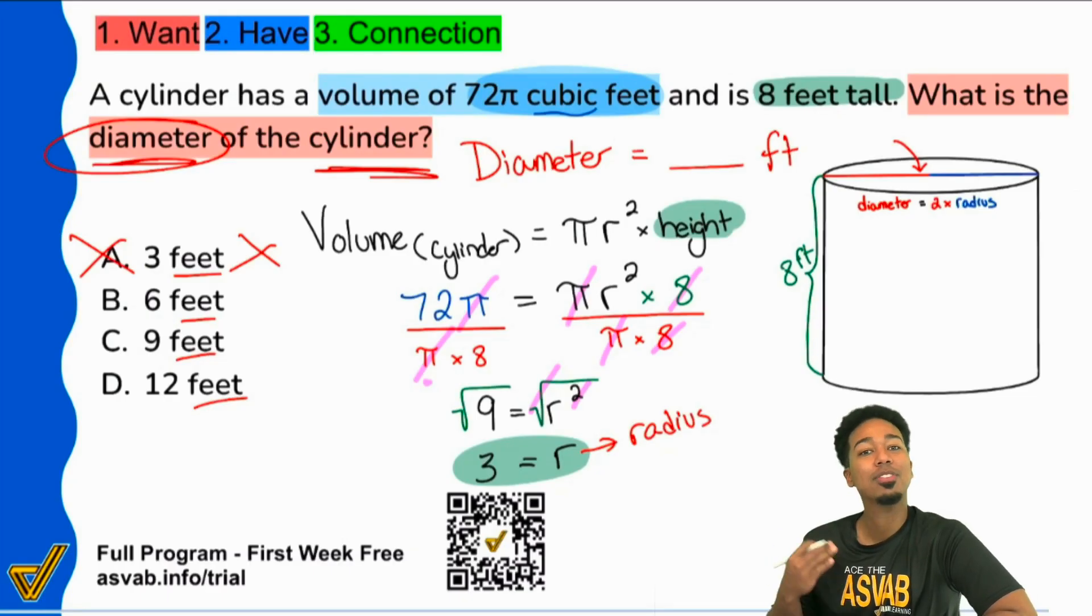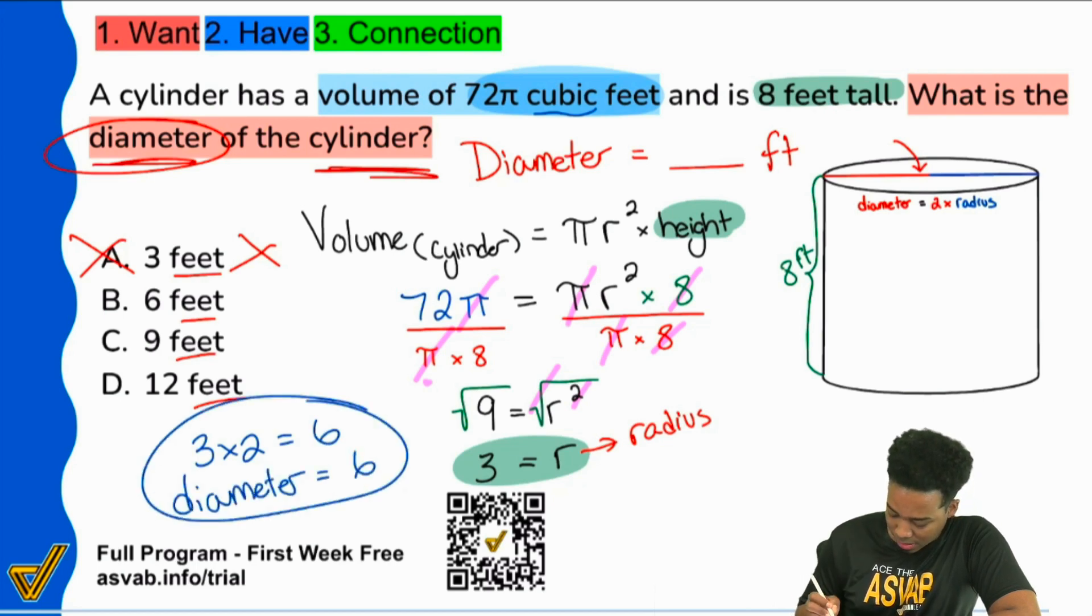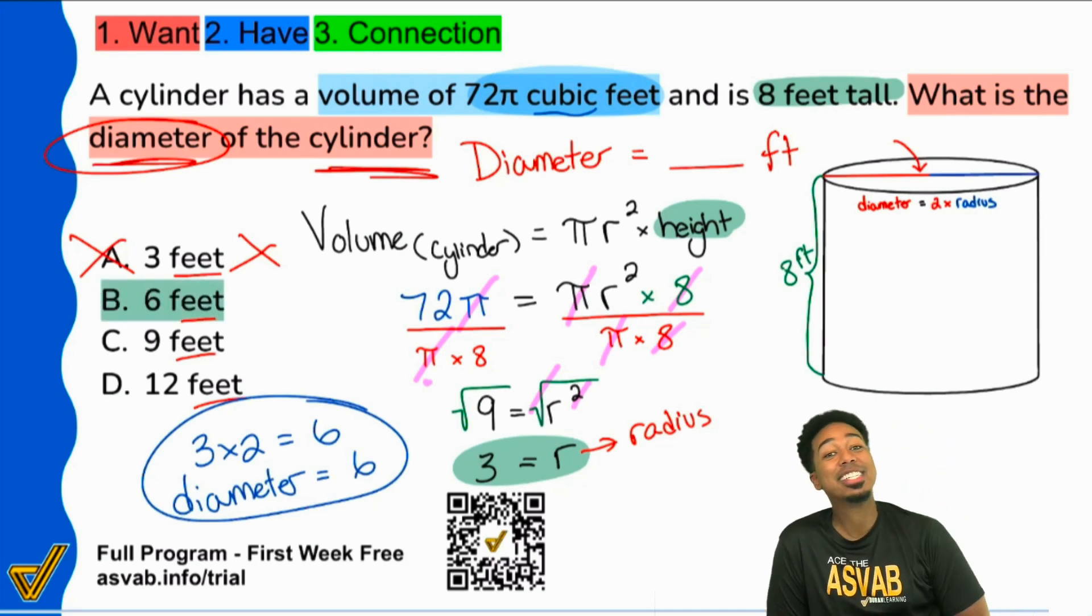To get the diameter, we have to double this. And so doubling 3 will get a 6. So 3 times 2 equals 6. So the diameter equals 6. And that's why B is the correct answer. 6 feet.